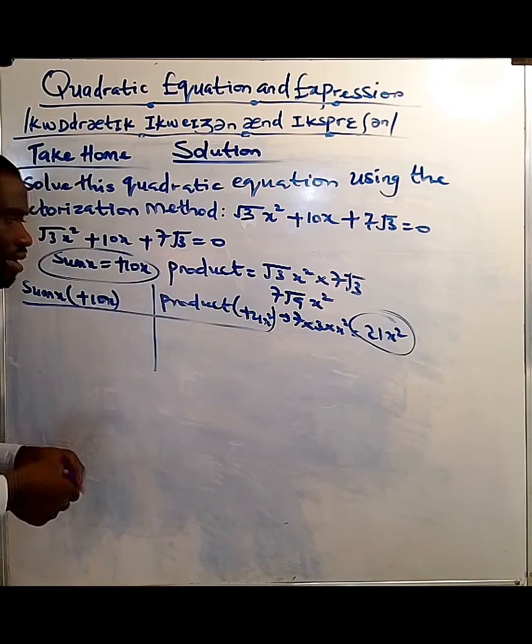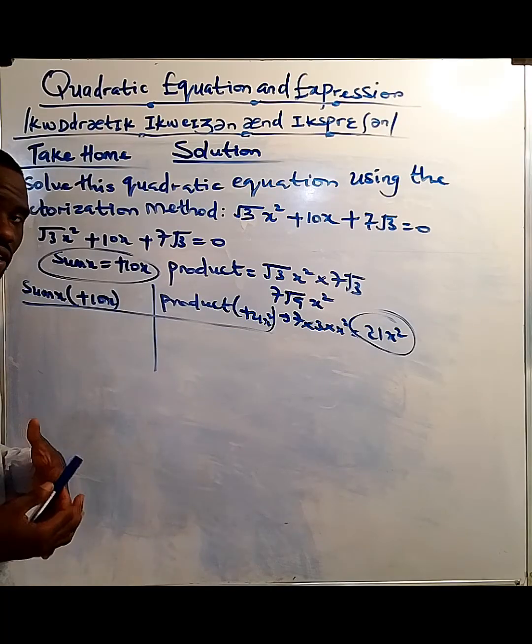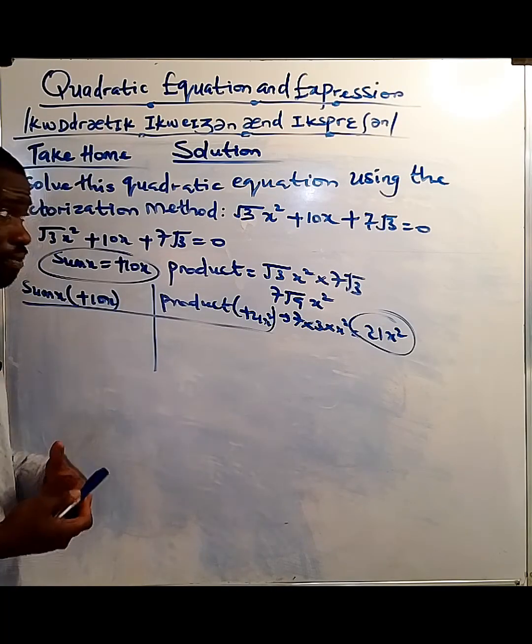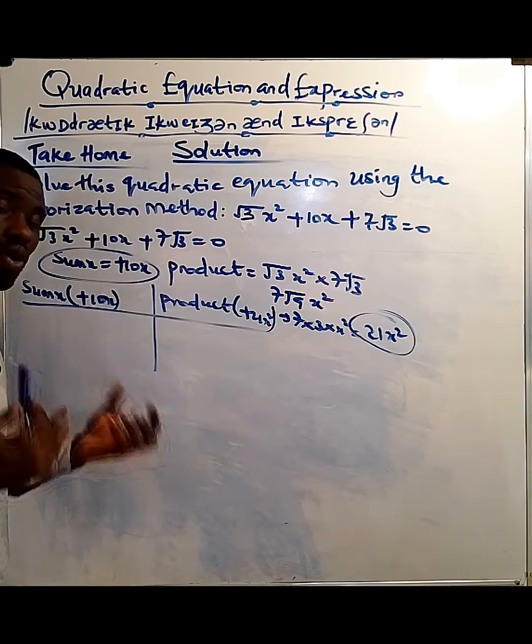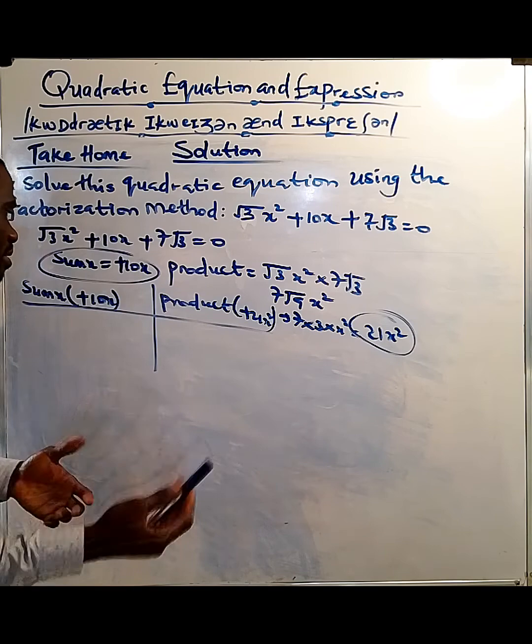Now if we look at the product that we have here, the product is a positive product. So for the fact that I have a positive product, it means the two signs that came together, the two factors that came together, have the same signs. Minus minus or plus plus. It's clear enough.